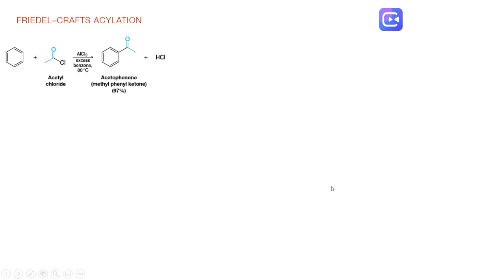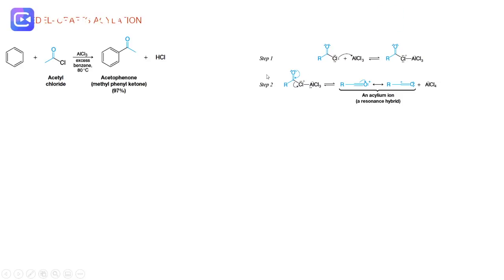Friedel-Crafts acylation will also use an aromatic ring. Instead of alkyl halide, we have acetyl halide to have an acetyl group on the aromatic ring in the presence of Lewis acid. To talk about the mechanism of this reaction, we have to talk about acylium ion because it will be the electrophile. First step, also the same as in alkylation: acetyl halide will react with Lewis acid to have this complex.